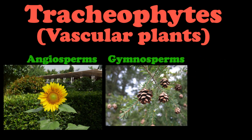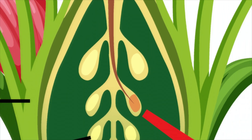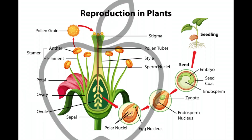For those who don't know, angiosperms are flowering plants which develop their seeds inside an ovary which is protected by a fruit.